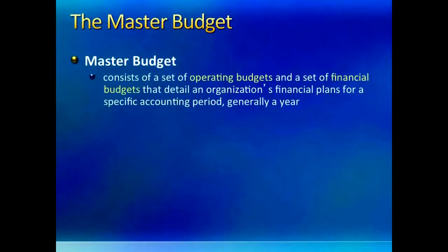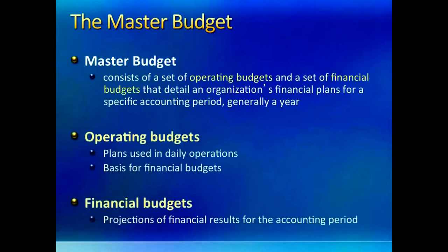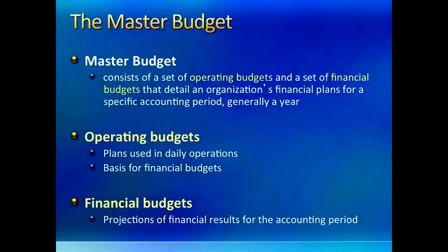The master budget of a company is a master plan with numbers. It consists of two main types of budgets: operating budgets and financial budgets. Operating budgets are used in daily operations and become the basis for financial budgets, which are projections of financial future results for the company. We will see both these types of budgets in more detail.